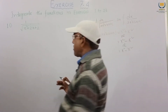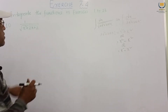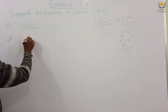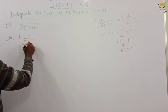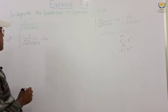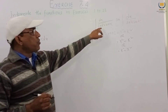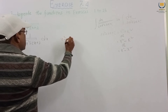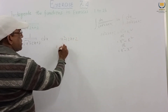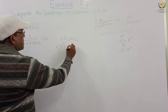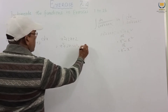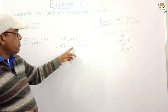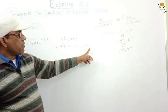So this is a quadratic form ax square plus bx plus c. We convert this. Solution: integration 1 by root over x square plus 2x plus 2 dx. This is quadratic under root. So we consider x square plus 2x plus 2, which is x square plus 2 times x times 1 plus 1 square minus 1 square plus 2. We convert to perfect square form.